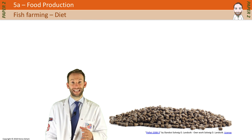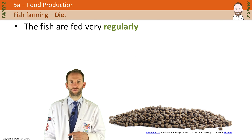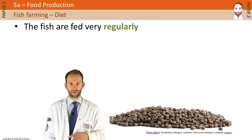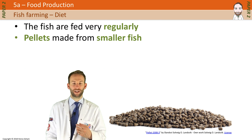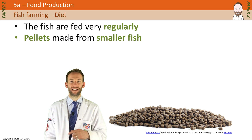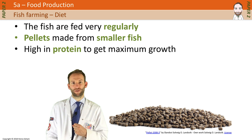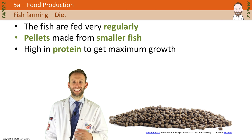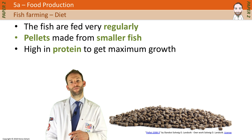The diet has to be controlled effectively as well. Fish are fed very regularly, sometimes 24 hours a day, to get them to grow as fast as possible. They're fed pellets usually made from smaller fish, which is actually an issue in itself as it's causing a big decrease in wild fish species. The diet is very high in protein for maximum growth, and the pellets usually contain additives such as antibiotics.